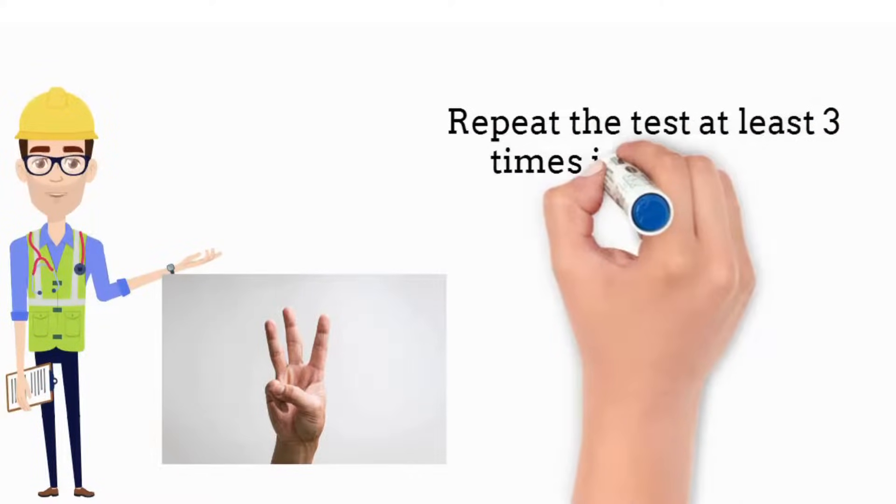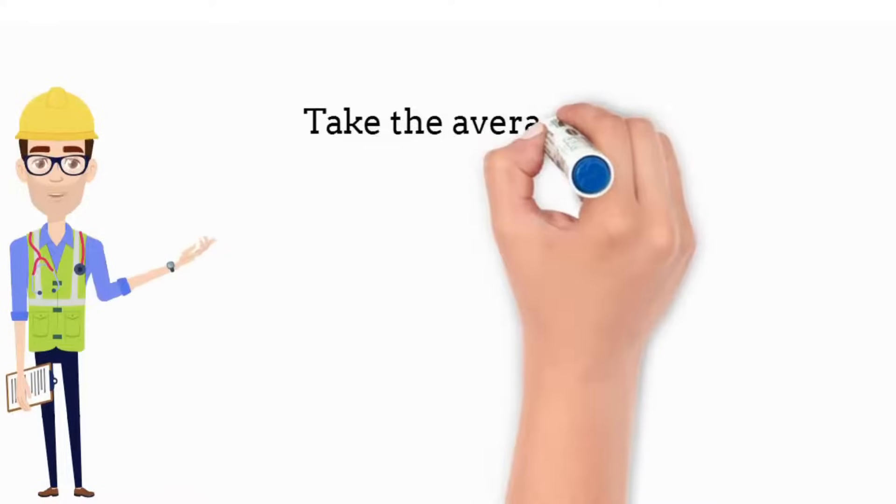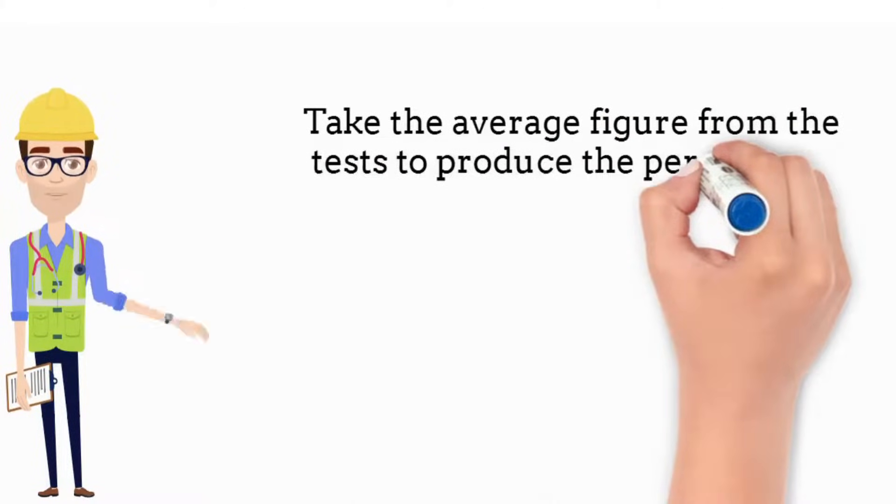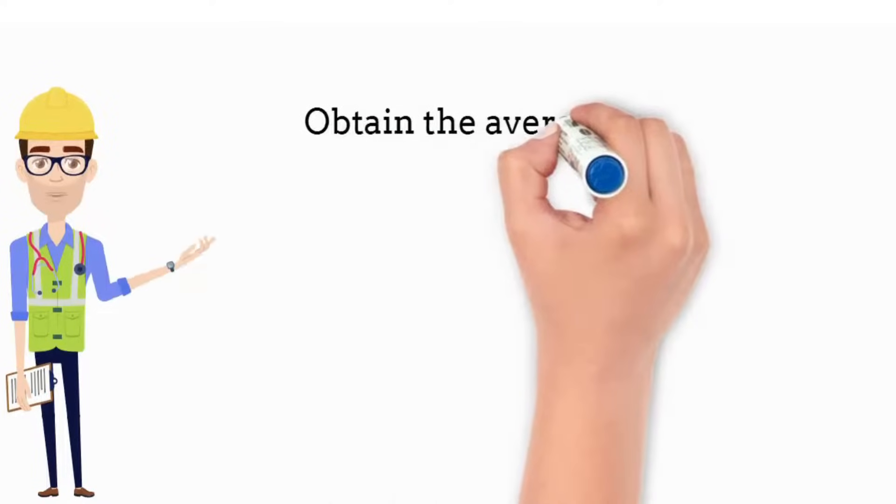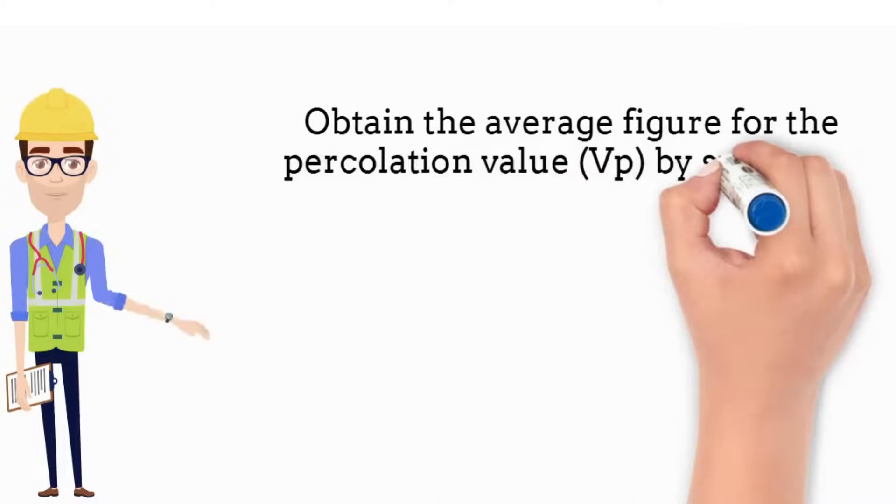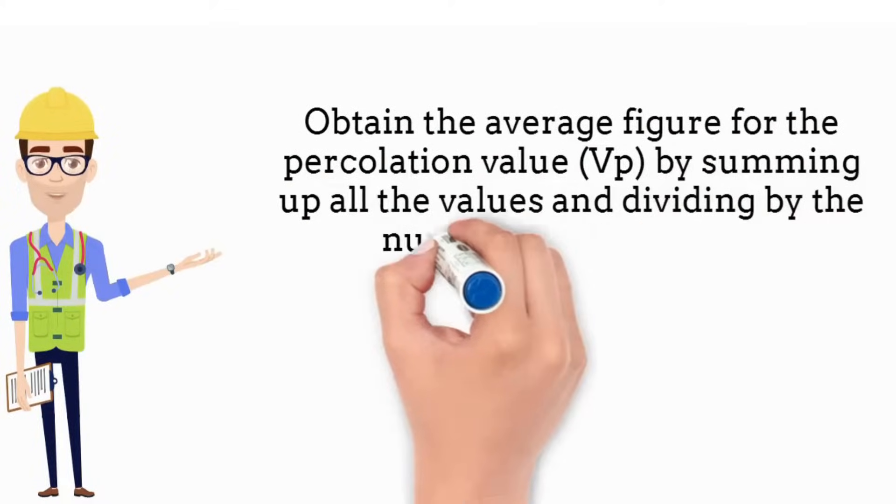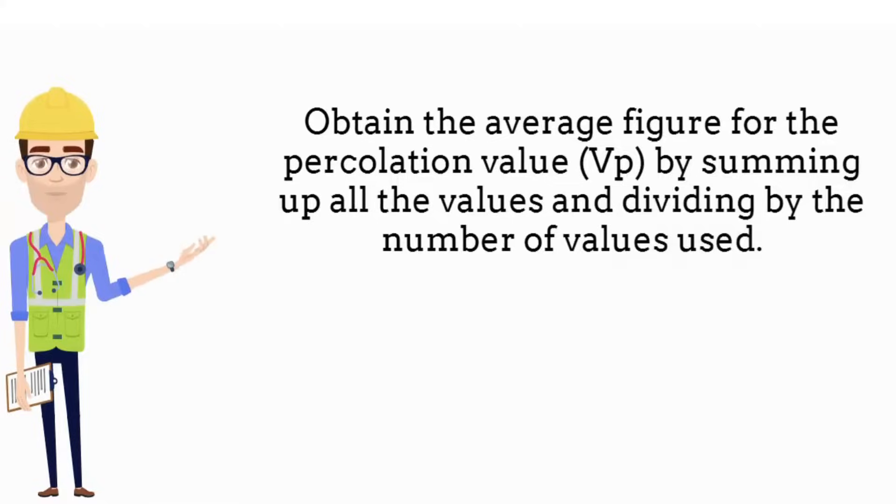Repeat the test at least three times in each hole. Take the average figure from the tests to produce the percolation value VP in seconds. Obtain the average figure for the percolation value VP by summing up all the values and dividing by the number of values used.